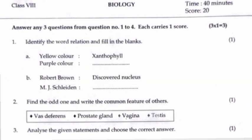Find out the odd one out and write the common features of the others. Options: Vas deferens, Prostate gland, Vagina, Testis. Answer: Vagina. The others are parts of the male reproductive system.